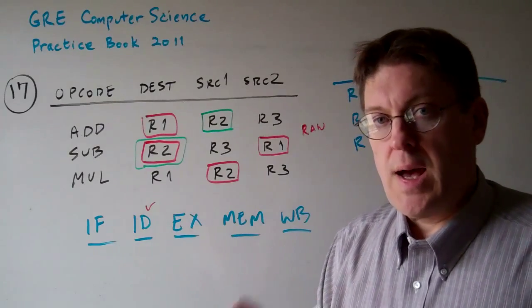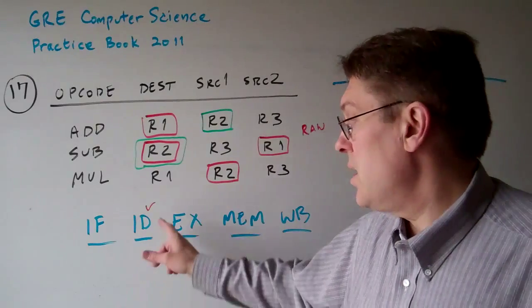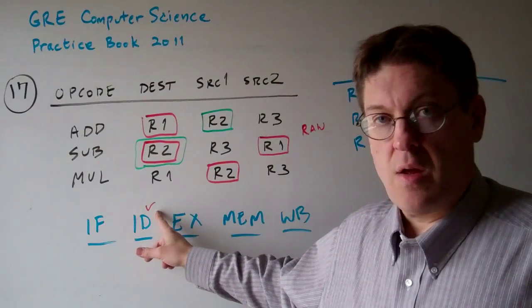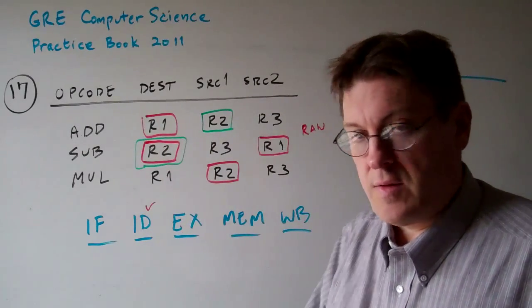Question is this. How many data hazards does the ID stage need to detect for this instruction sequence? Let's take a look at it here.